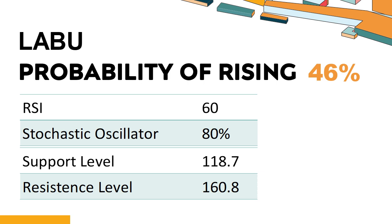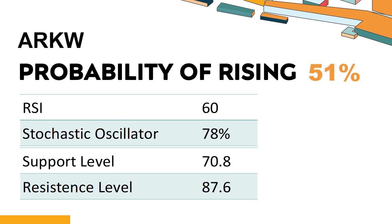Trend Outlook: LABU has a 46% probability of rising stock price. When the probability of rising is lower than 50%, the probability of falling is relatively high. Combining multiple technical analysis indicators, LABU has five bullish signals and two bearish signals. LABU's short-term support level is 127.9. If it falls below 127.9 during the session, it will have a chance to test 118.7.